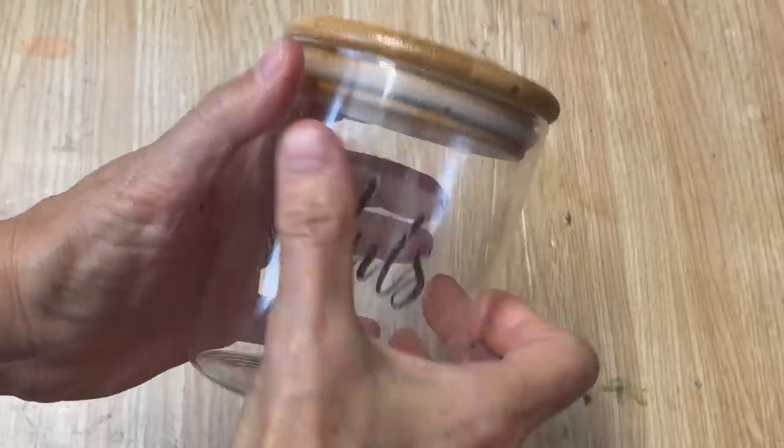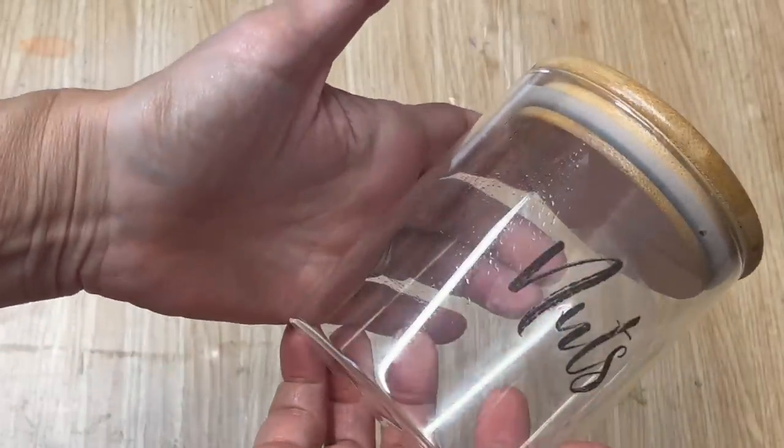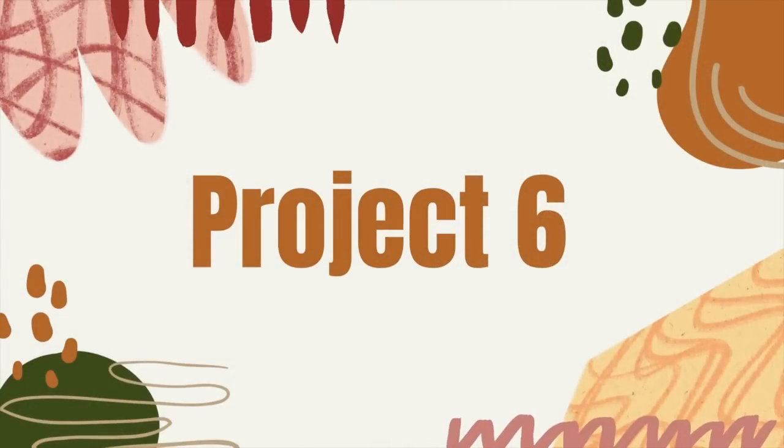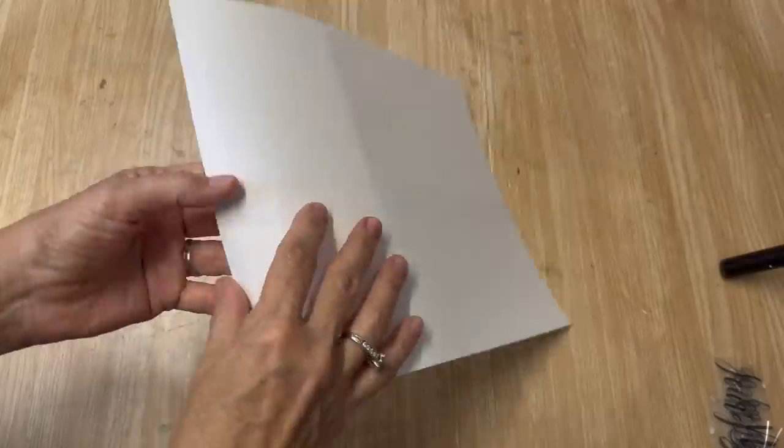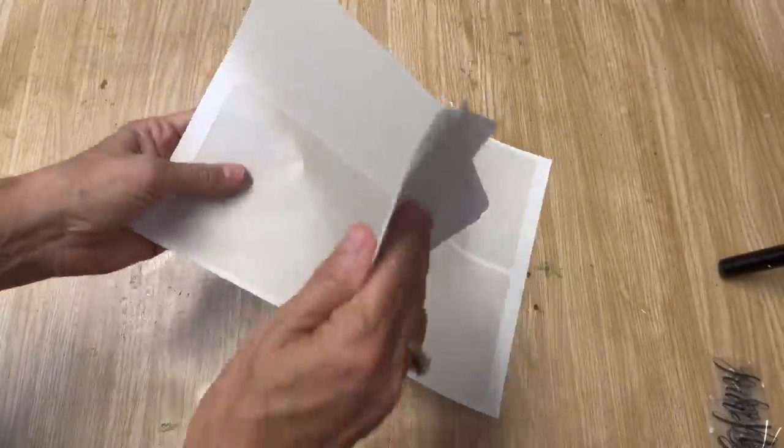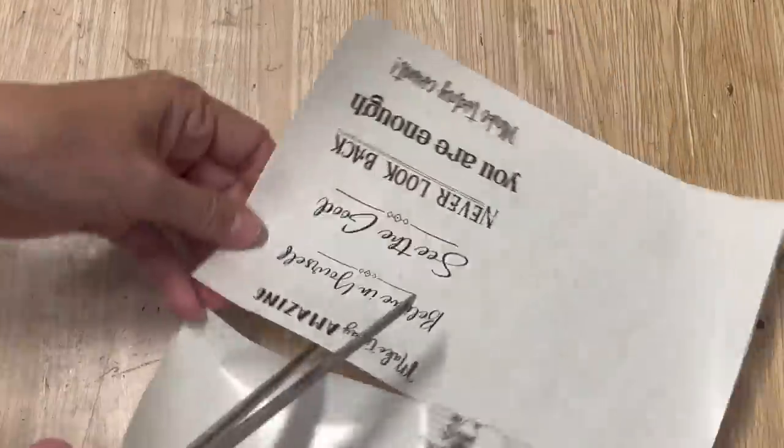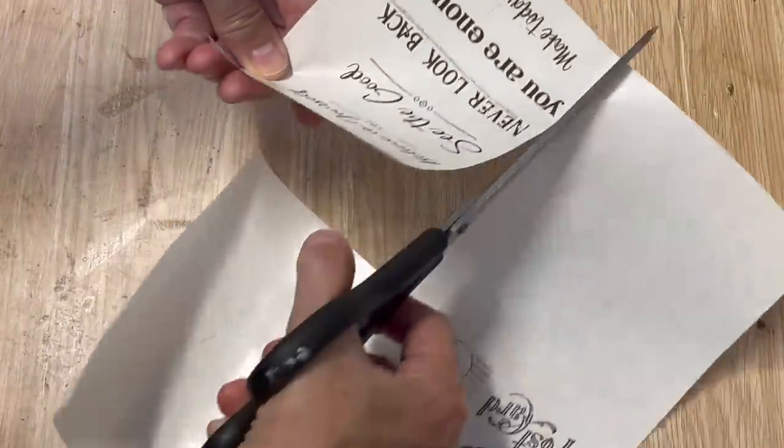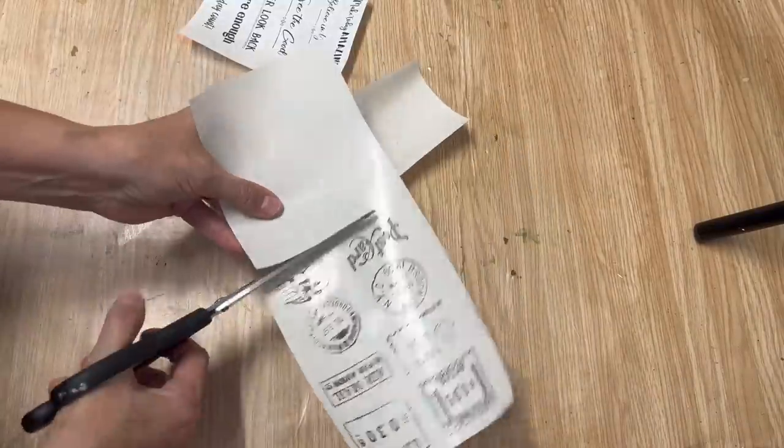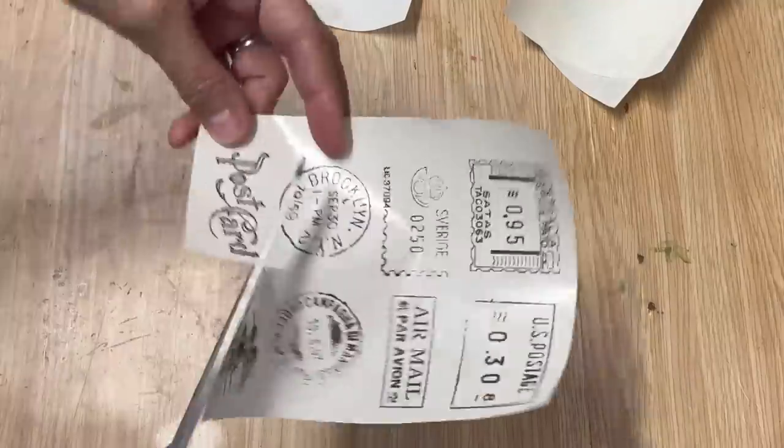Another DIY project is label sheet one minute transfers. I found these label sheets at the thrift store but you can find them in the stationery store. We want that shiny piece of paper. I've printed this on my laser jet printer - this will only work with a laser jet printer.